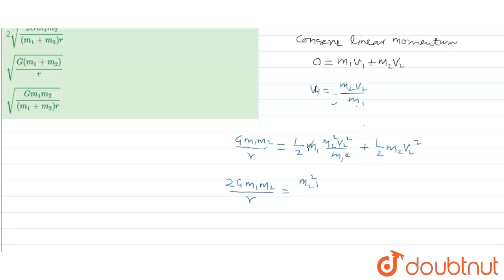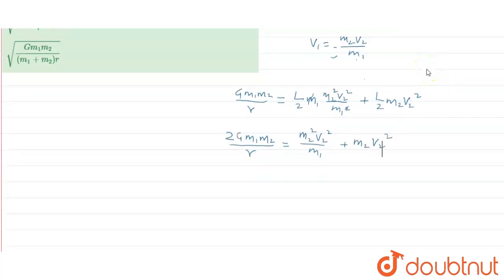This becomes m2 square v2 square upon m1. So 2 G m1 m2 upon r will be equal to m2 v2 square times m2 upon m1.